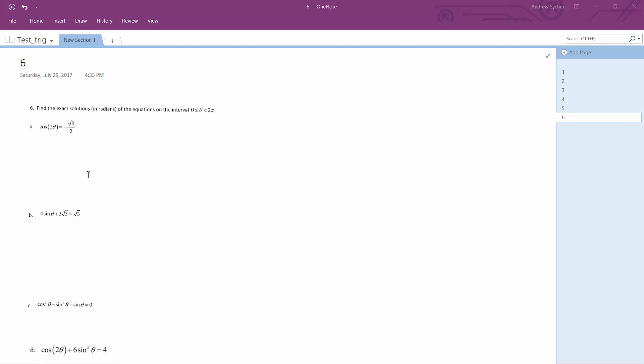Alright, solving for the cosine of 2 alpha, we're going to get the same thing as cosine squared theta minus sine squared theta. What this can be reduced down to is 2 cosine squared theta minus 1 equals negative root 3 over 2.